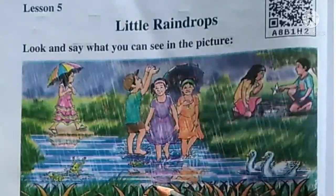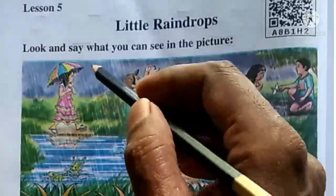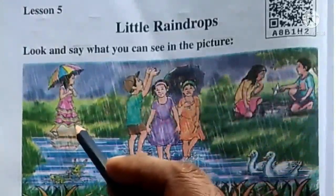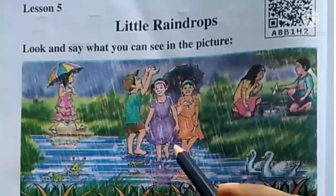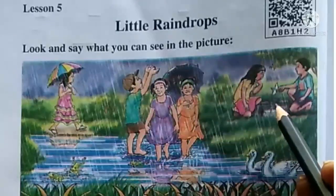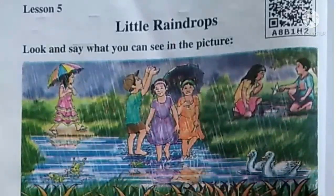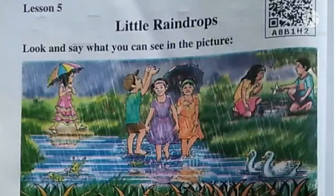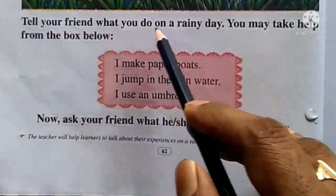So let's try to say what we can see in the picture. We can see that it is raining. A girl is walking with an umbrella. Some children are jumping in rainwater. These children are making paper boats. Some frogs are jumping in rainwater. Ducks are swimming happily.